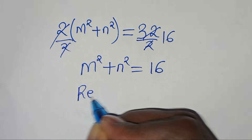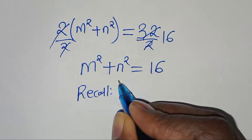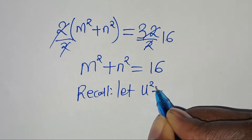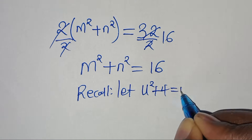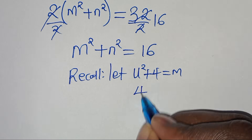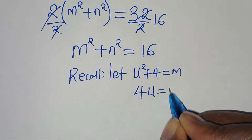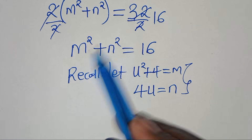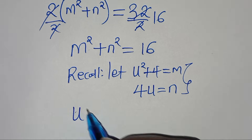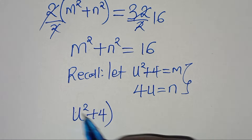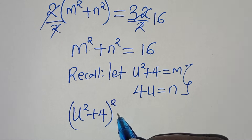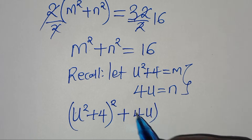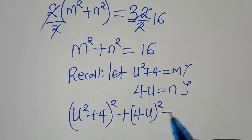Recalling that u² + 4 equals m and 4u equals n, let's substitute back: (u² + 4)² + (4u)² equals 16.